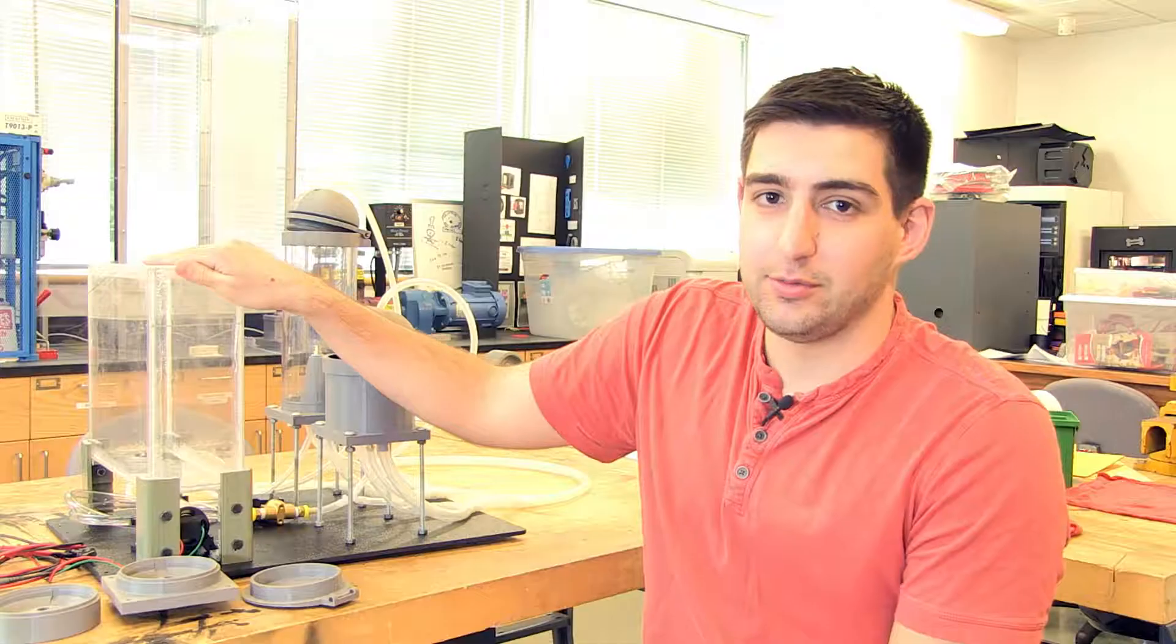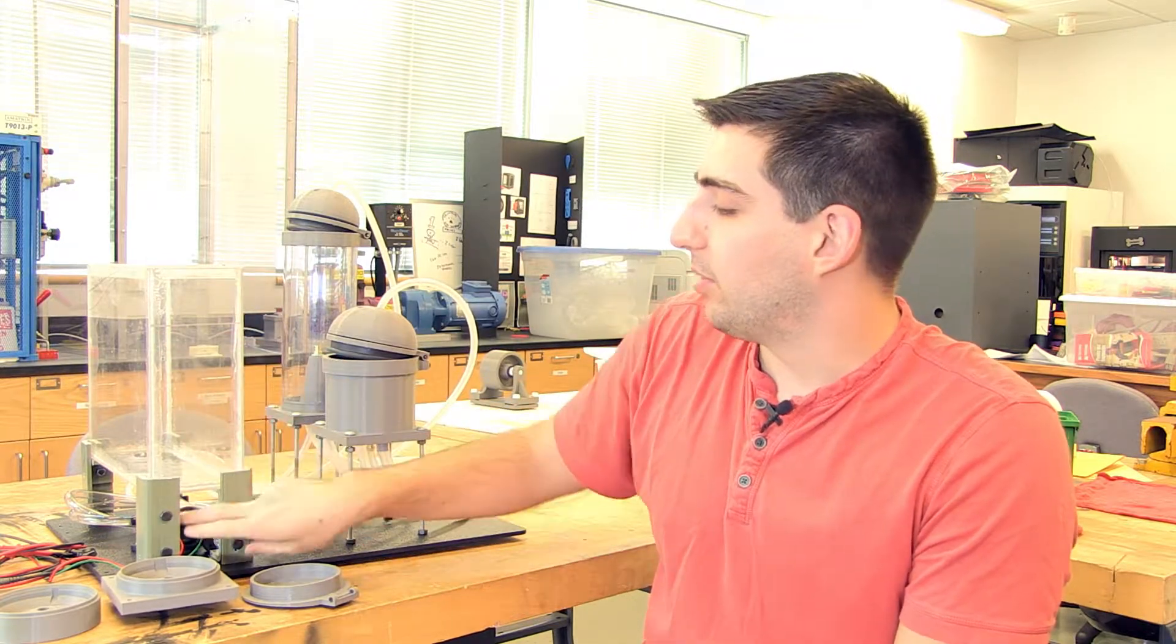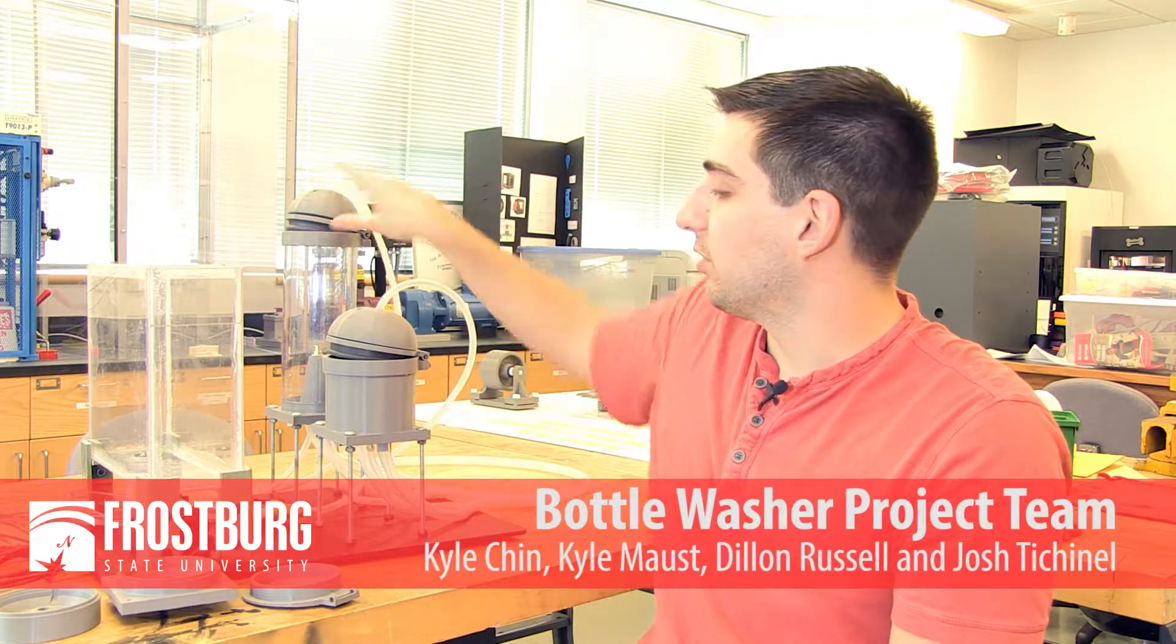Our design starts here. The water tank is removable and you can fill it up with water and then place it back in. The pump right here will pump water through. There's a solenoid to switch between the lid reservoir and the bottle reservoir to wash the two.